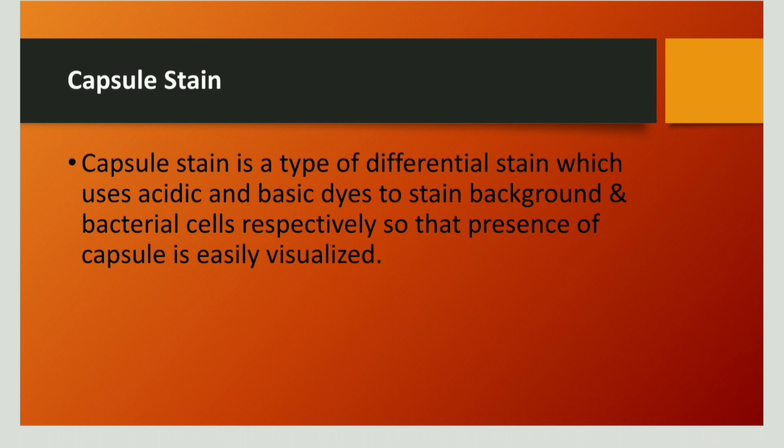To identify this capsule layer, we use capsule staining. Capsule staining is a differential staining technique and uses acidic as well as basic stains. The acidic stain is used for staining the background and the basic stain is used for staining the bacterial cells.